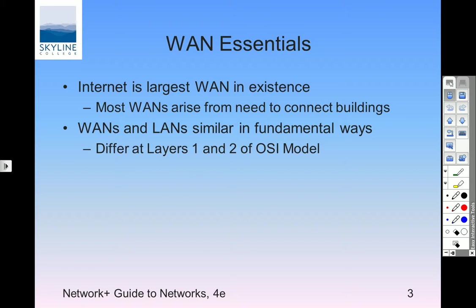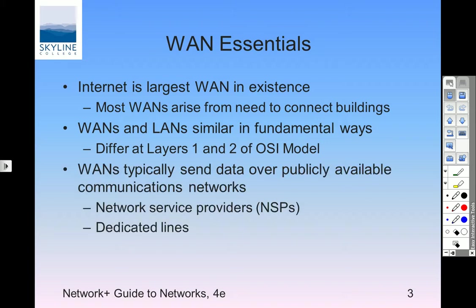WANs and LANs are similar in fundamental ways but different at Layer 1 and 2 — mostly Layer 2, where the protocols are defined. They have one in here called X.25 which did sneak into Layer 3 also, but it's not really used anymore; we use a souped-up version called Frame Relay. WANs typically send data over publicly available communication networks, network service providers, and dedicated lines. A dedicated line from here to Virginia Beach is bought and paid for — they pay for the connection between here, Greensboro, Raleigh, and so on.